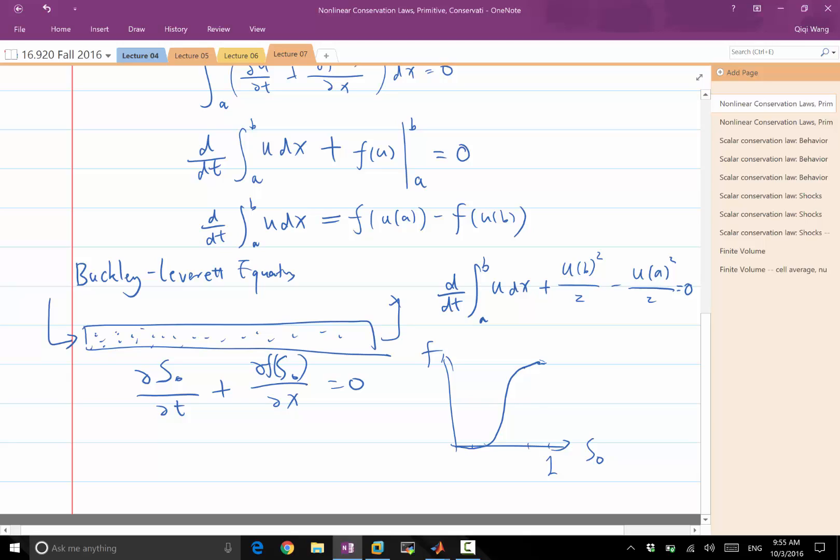So, this is an example of a scalar conservation law, where you can use only one variable to denote the state. And our flux is a direct, a scalar function of that one variable.